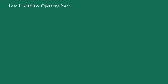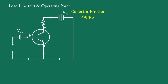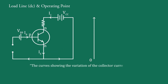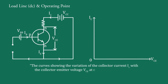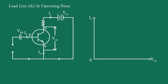To study the DC load line, output characteristics of a transistor are required. We will draw the output characteristics of a common emitter circuit for an NPN transistor, with VBB as the base-emitter supply and VCC as the collector-emitter supply. The curve showing the variation of collector current IC with collector-emitter voltage VCE at constant base current IB is called the output characteristics of a transistor.